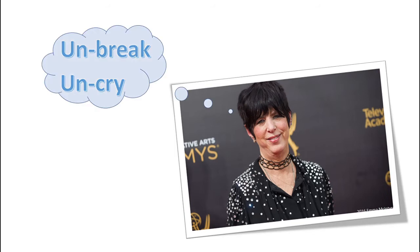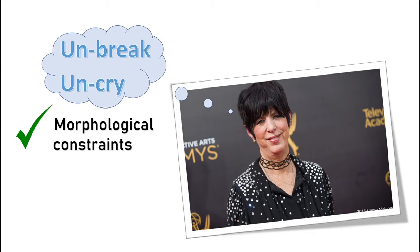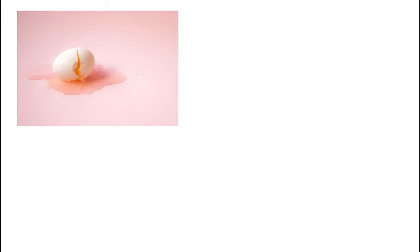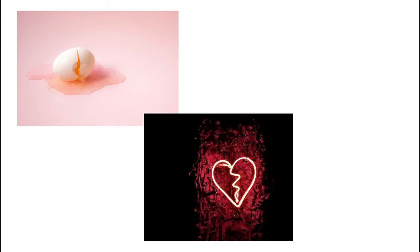Neither 'unbreak' nor 'un-cry' are official English words — they were invented by the songwriter Diane Warren. They don't violate any morphological constraints per se; the prefix un- can attach to verbs. But they do violate semantic constraints. The prefix un- means to do the reverse of an action. Just as you can't un-crack an egg, you can't un-break a heart or un-cry tears.